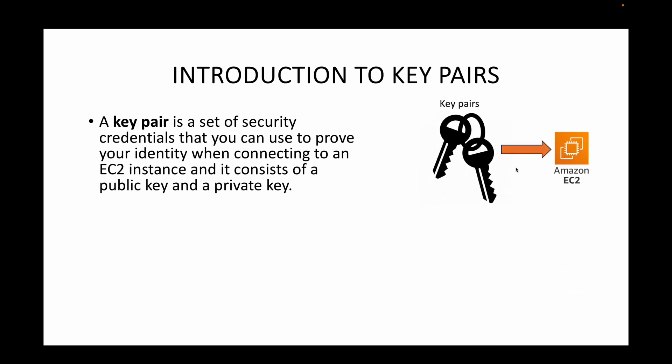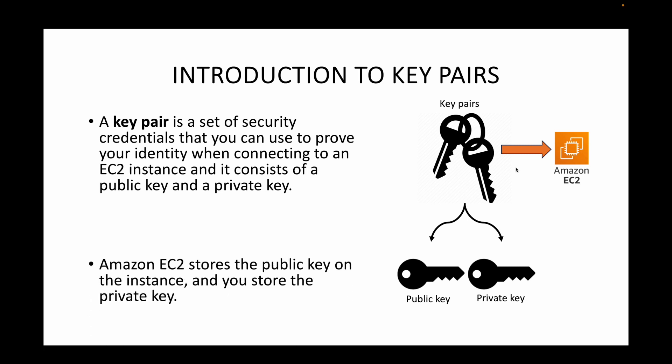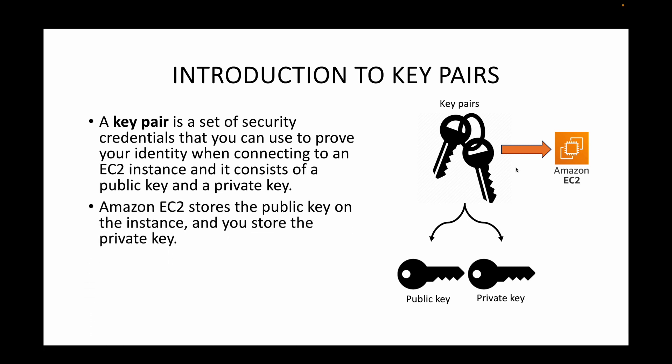Key pairs consist of two things: a public key and a private key. Together they make up your key pair, and we always use both to connect to EC2 instances. Whenever we create a key pair, the public key is stored by EC2 and the private key is stored with us. AWS will store only the public key; AWS does not maintain a copy of the private key — only we keep the private key.